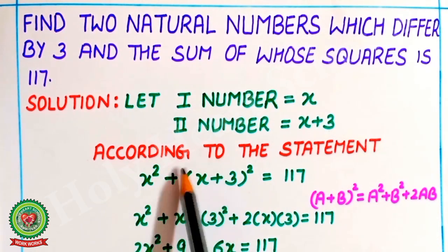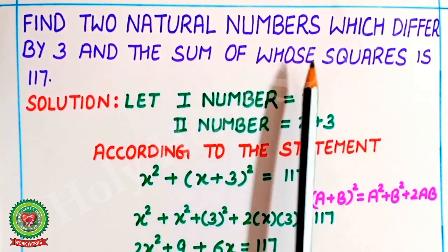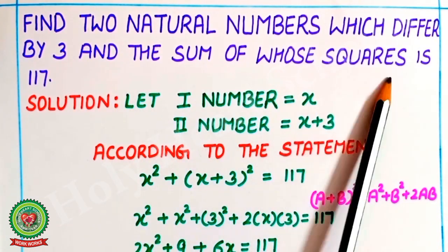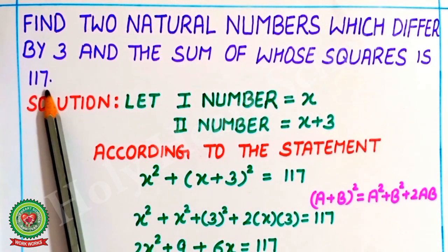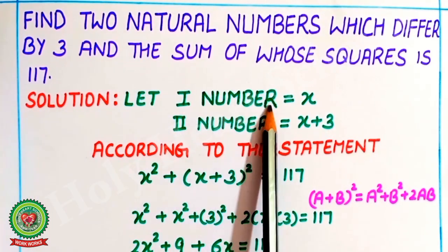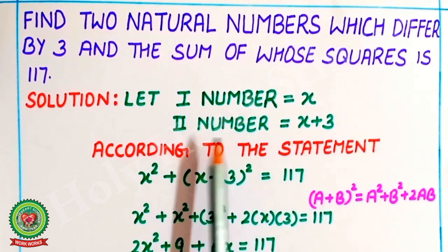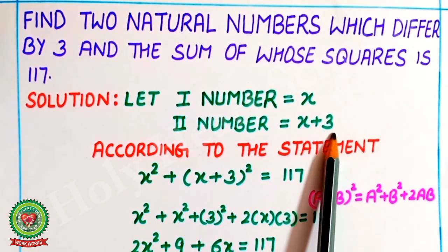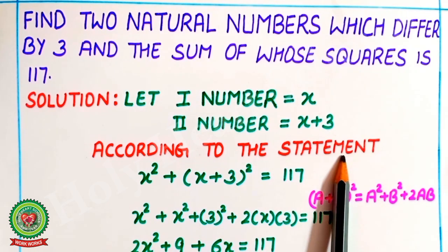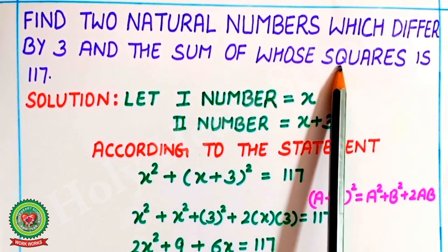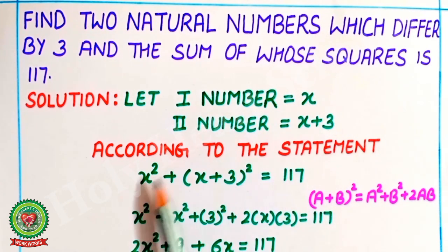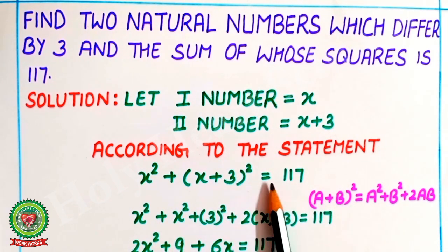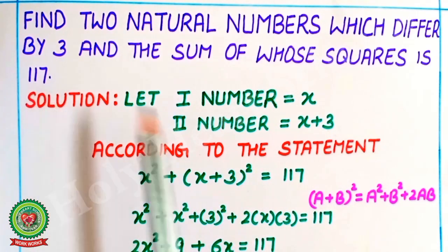Example 1: Find two natural numbers which differ by 3 and the sum of whose squares is 117. Let the first number equal x and the second number equal x plus 3. According to the statement, the sum of their squares gives: x squared plus (x plus 3) whole squared equals 117.